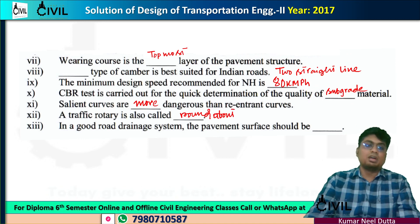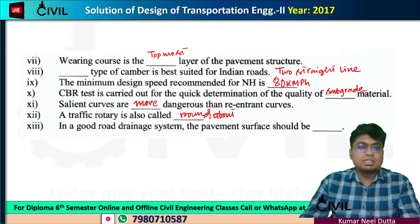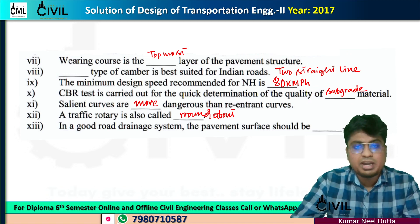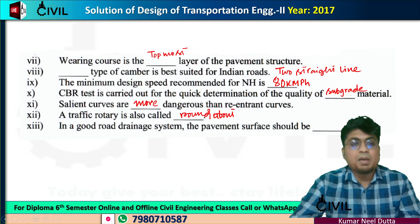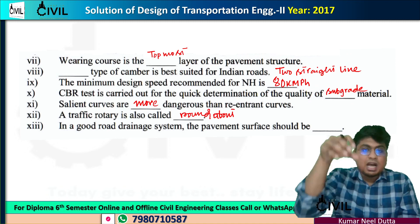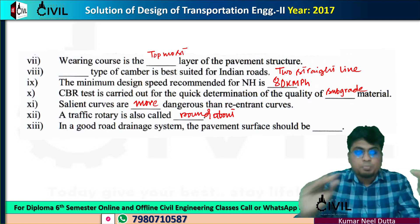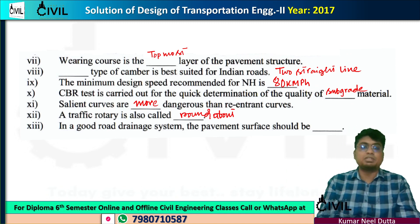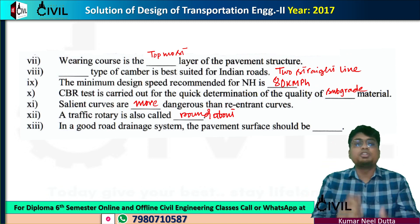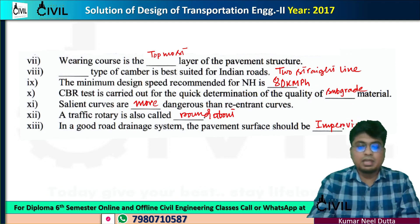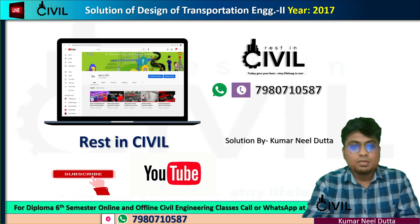For good drainage of a road system, the pavement surface should be impermeable. The pavement surface has a slope and camber to drain off water. As the pavement surface is impermeable, water drains off effectively. So the answer is that the pavement surface should be impermeable.